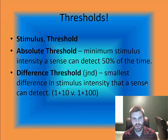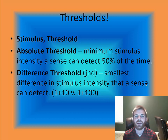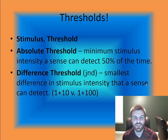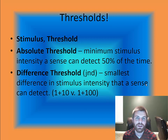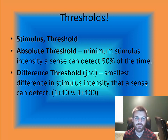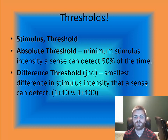Much of sensation depends on thresholds. A stimulus has a threshold for how potent it is — how loud a noise, how strong a taste, how intense a smell or visual signal. We have absolute thresholds, which are the minimum stimulus intensities a sense can detect 50% of the time — for example, a faint candlelight in the distance or a drop of perfume in a four-room apartment. A close cousin is the difference threshold, also called the just noticeable difference — the smallest difference in stimulus intensity that a sense can detect.